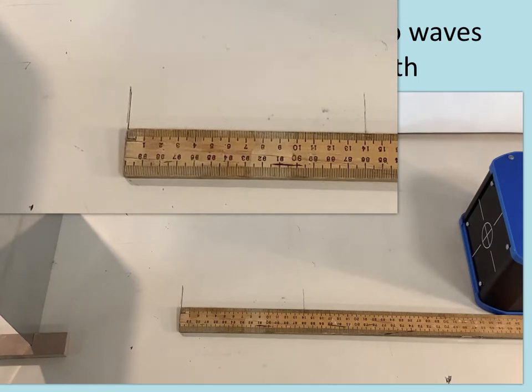So 14 centimeters from the zeroth node to the 10th node so you'll have to think about how many wavelengths that would be and hence what the wavelength of the wave is and then if I tell you that the frequency of the microwaves is 10.5 gigahertz you should be able to use that to work out the speed of light.